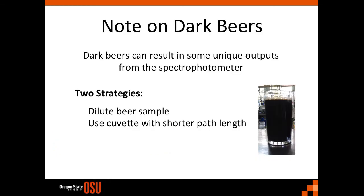A note on dark beers: the darker your sample gets, the more challenging it is for the spectrophotometer to interpret the absorbance. There are a few strategies to overcome this problem, however they can introduce some other issues as well. The first solution would be to dilute the beer sample. There is some concern here with regards to this being a true interpretation of the color, so the dilution should be consistent each time the measurement is completed. There is some evidence to suggest that dilution could cause a change in pH, offsetting the buffer system and actually changing the true color. If you go down this route, ensure that the dilution is consistent and includes the least amount of water possible.